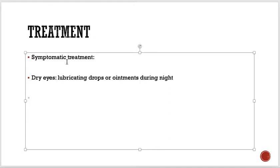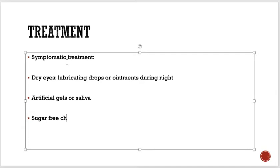There are some contact lenses that are good to protect the cornea. Artificial gels or artificial saliva is also available. Patients can be asked to use sugar-free chewing gums — all these things can help as well.